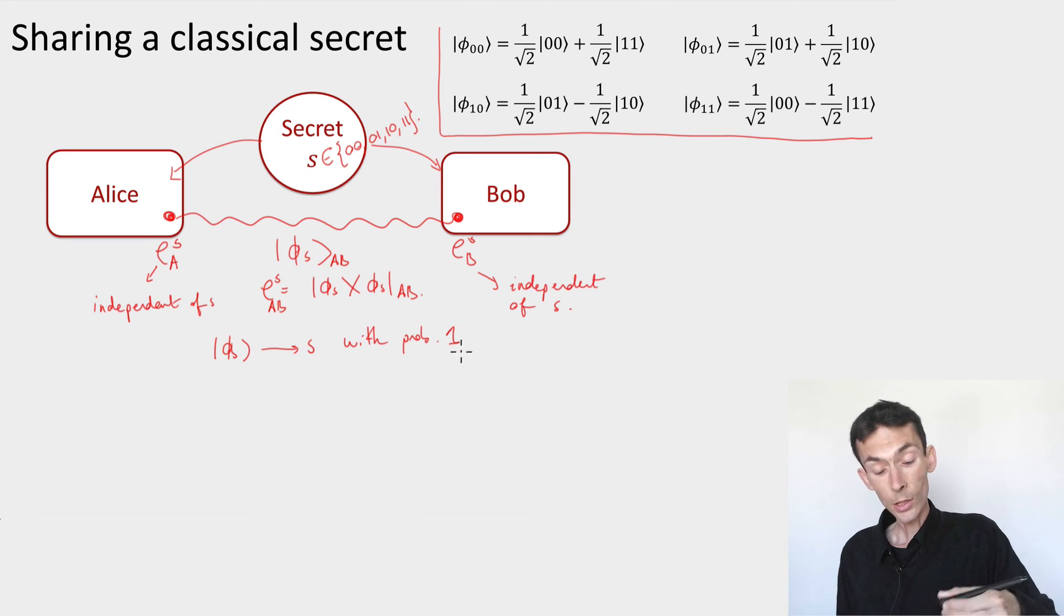And what this means is that there should be a measurement that measures phi s to recover s. So these states phi s should be orthogonal for different s. Okay. How do we do this? Well, you know it, right? My notation has leaked it. I mean, I sort of told you already.